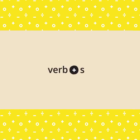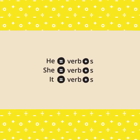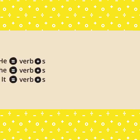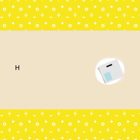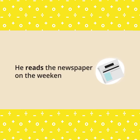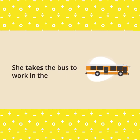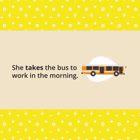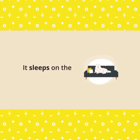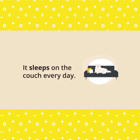Verb plus S. We use verb plus S when the subject pronoun is he, she, or it. For example: He reads the newspaper on the weekend. She takes the bus to work in the morning. It sleeps on the couch every day.